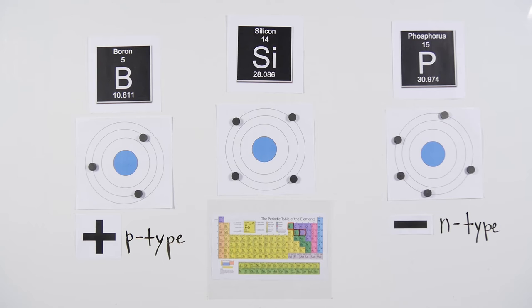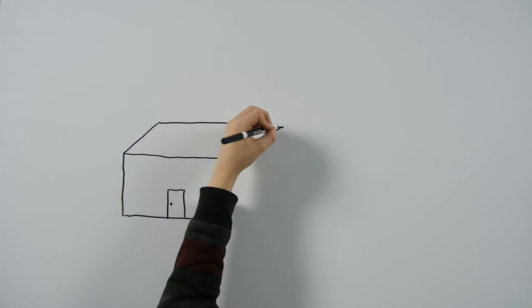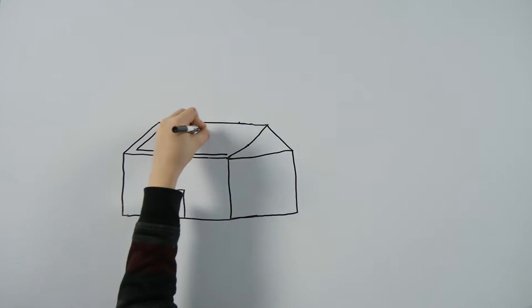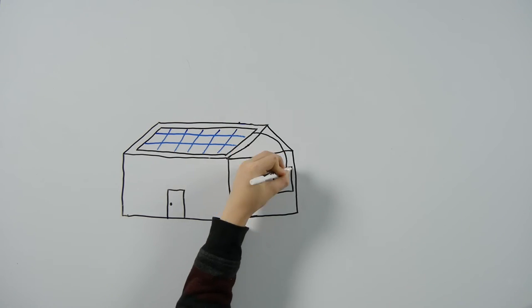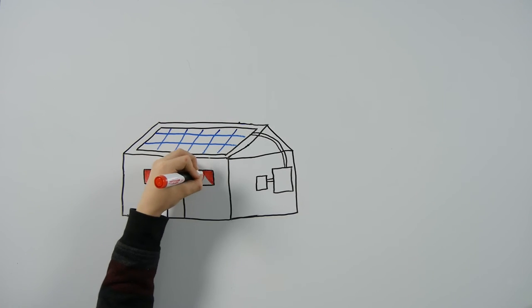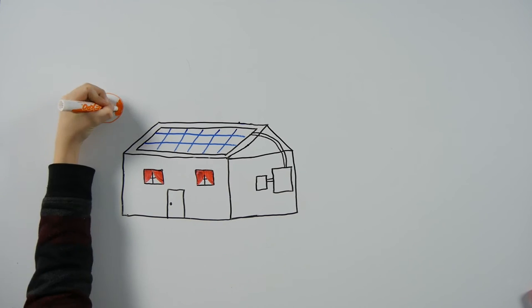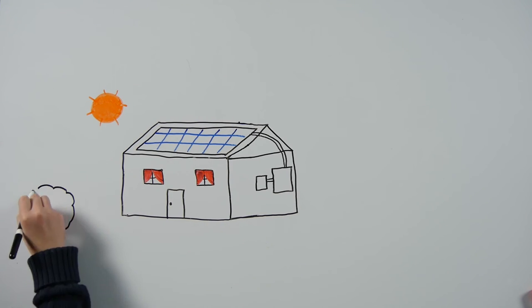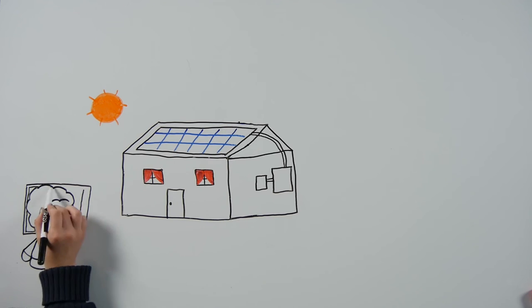But how do these electrons get freed up? Thankfully, photons from the sun come to the rescue. When photons from the sun hit the silicon in the solar panel, it knocks loose the extra electrons from the n-type silicon. These electrons travel toward the p-type silicon. This forms an electric current, which is picked up and carried away by a copper wire running between the PV cells.